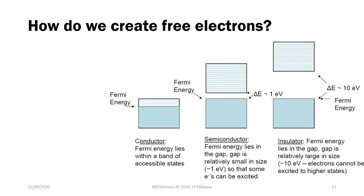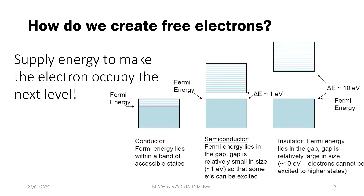Since free electrons are really important in electronic conduction, how do we create free electrons? The creation of free electrons happens by supplying energy to your electrons to make them increase in energy level. This can be done through light or through thermal energy. Depending on how easy it is to promote an electron from a lower energy state to a higher energy state, this dictates whether or not your material will become a conductor or an insulator — predicted by your band structures.